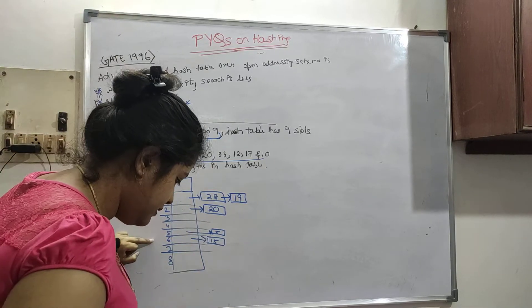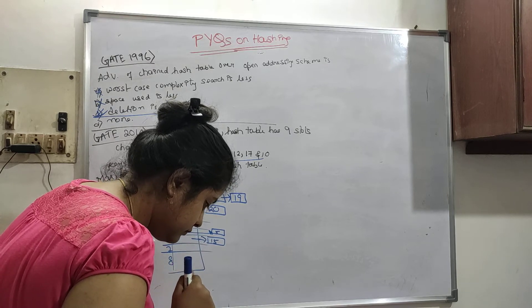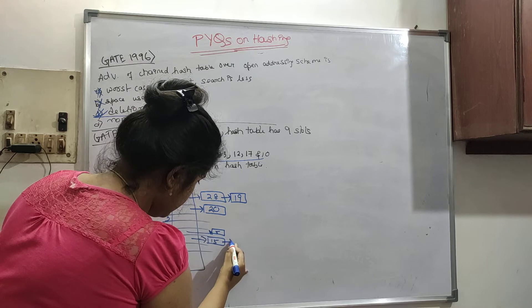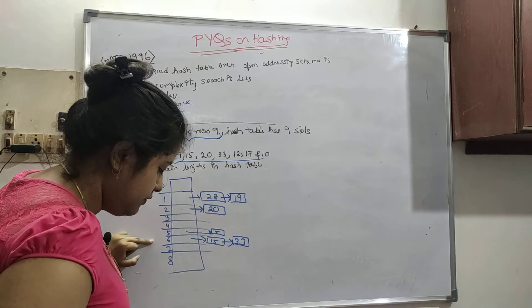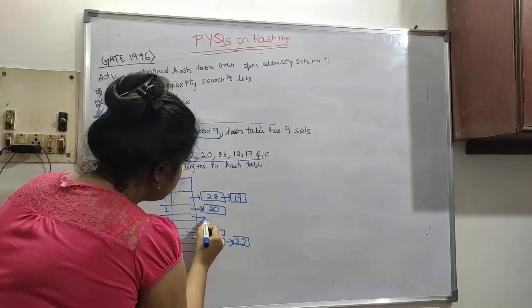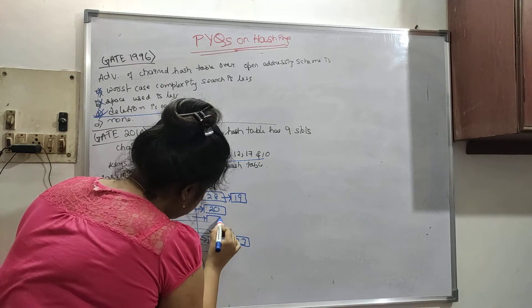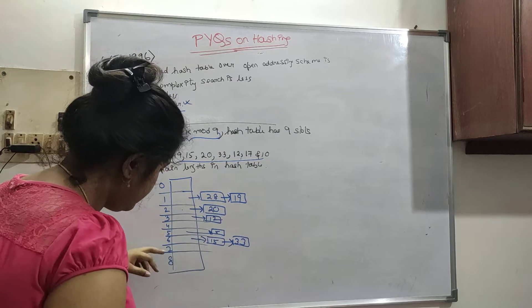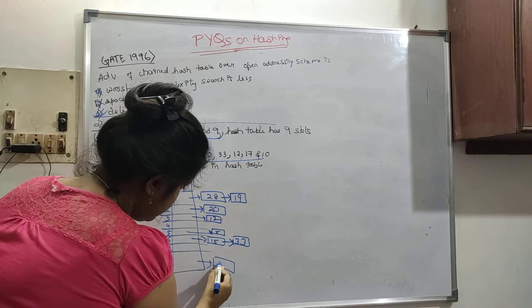33 will be placed in here. Here 33. Then 12. 12 minus 9 is 3. Then 17. 17 minus 9 is 8.